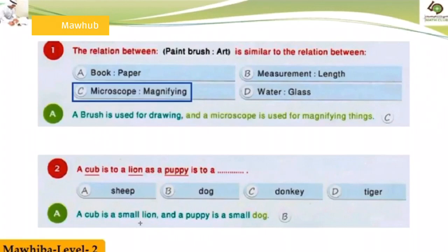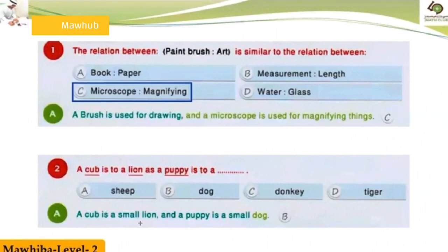What can I say — my reason for why I picked it? Okay, you can go ahead. Because you need a paintbrush to do art, so similarly you need a microscope for magnifying. Yeah, that's fine — good job!